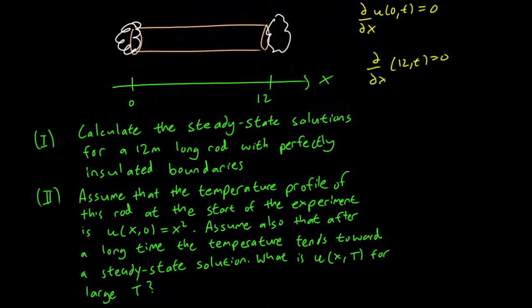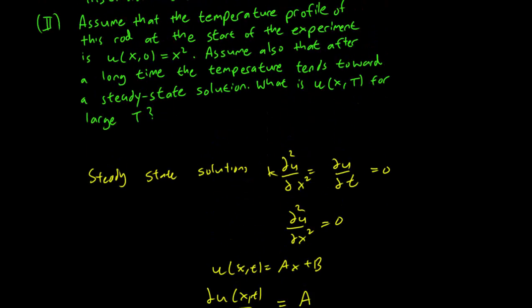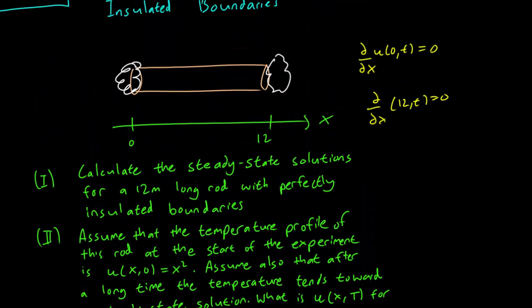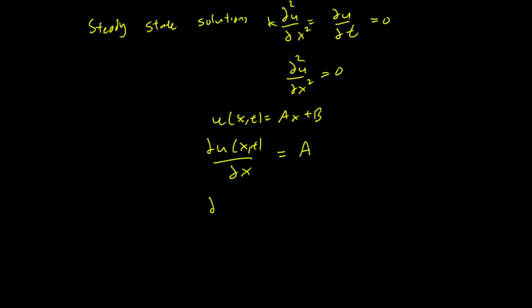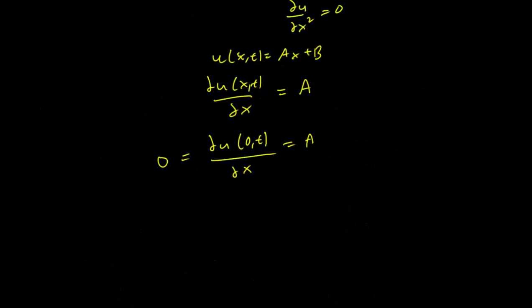So let's now just plug in our boundary conditions. We have partial derivative with respect to x equals a. We know that partial u of 0,t partial x is 0. This is equal to a still, since a is a constant, it's independent of x, but we know that this is equal to 0 just based on the boundary condition here. This implies that a is equal to 0.